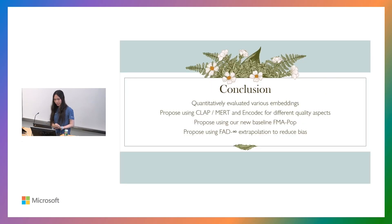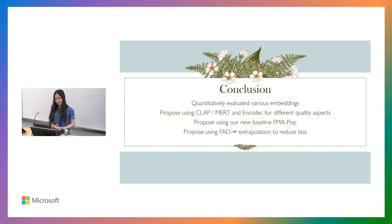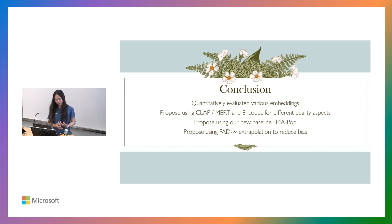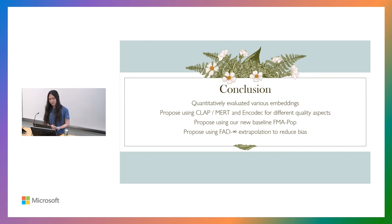This concludes our presentation. In conclusion, we quantitatively evaluated various embeddings and propose using CLAP or MERT and EnCodec for different quality aspects — namely musical and acoustic quality. We propose using FMAPOP as a new baseline instead of the commonly used MusicCaps baseline, and we propose using FAD infinity extrapolation to reduce the sample size bias.